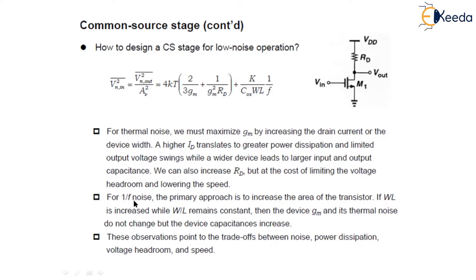For flicker noise — 1/f noise — the primary approach is to increase the area of the transistor, since flicker noise is inversely proportional to the product W·L. We can keep the aspect ratio W/L constant and increase the area by increasing both W and L. In this way, the device transconductance GM and its thermal noise do not change, but the device capacitance changes.